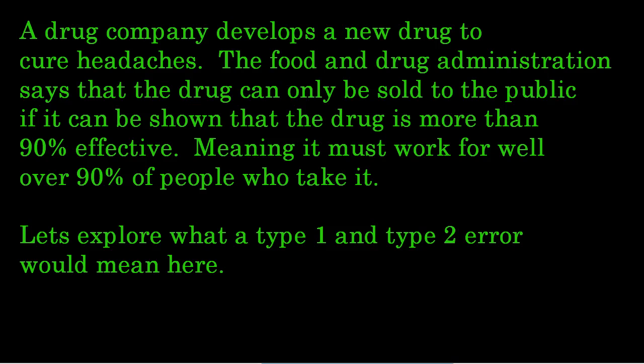So here's a good example for us to practice this. A drug company develops a new drug to cure headaches. The Food and Drug Administration says that the drug can only be sold to the public if it can show that the drug is more than 90% effective, meaning it must work for well over 90% of people who take it. So let's talk about a type 1 and type 2 error. First, we do need our null, and we need an alternative hypothesis. So the null would be that the proportion is still 90%. The alternative is what this drug company is hoping for. They're hoping to show that their new drug works for well over 90% of people.